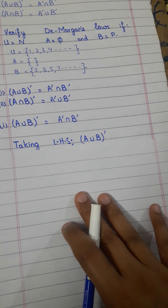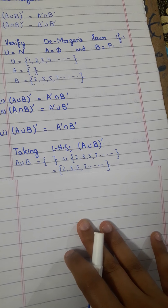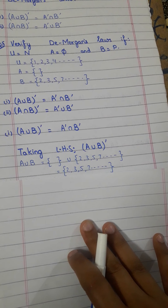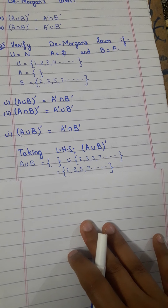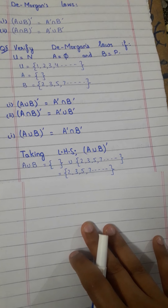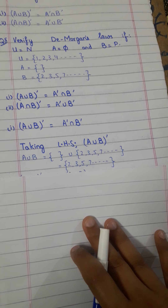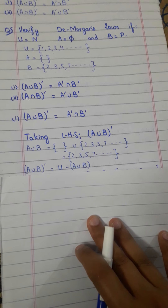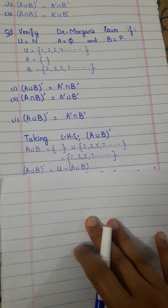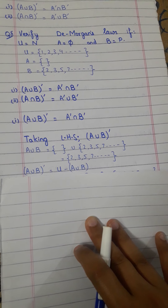Taking the left-hand side: (A∪B)'. First you have to solve A∪B — write the value of A, which is the empty set, union B which is {2, 3, 5, 7, ...}. The answer becomes {2, 3, 5, 7, ...}. Now (A∪B)' is equal to U minus (A∪B).